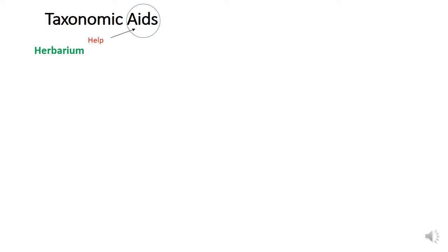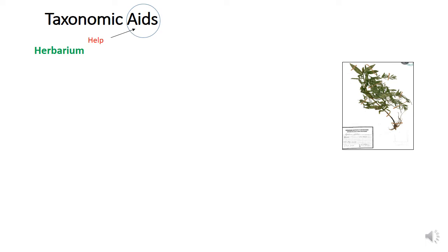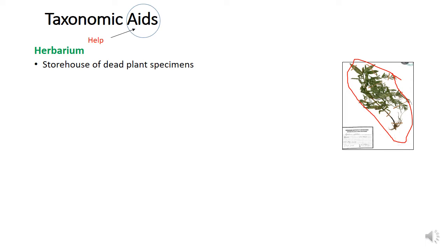The first tool is a herbarium. Maybe you have made herbarium sheets in 11th or 12th class. There are some sheets called herbarium sheets. On these sheets, we dry the plant specimen and preserve it. We put the sheets in a file and call it a herbarium file. Since we are collecting plant specimens in a herbarium, it is also called the storehouse of dead plant specimens.